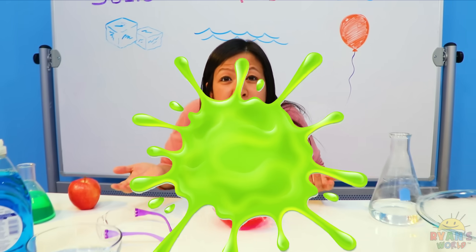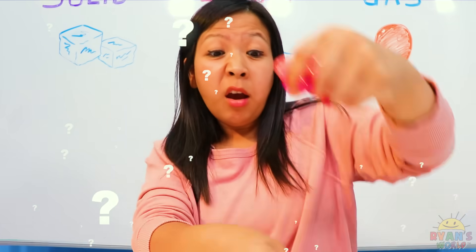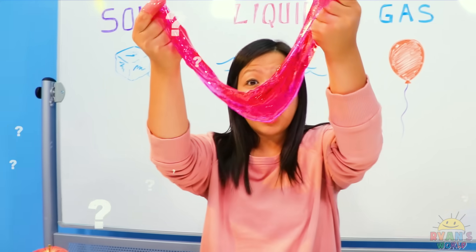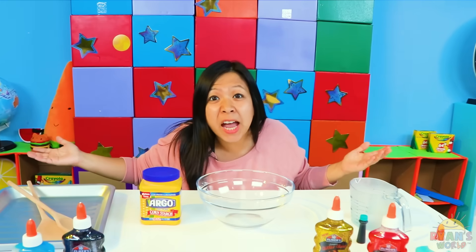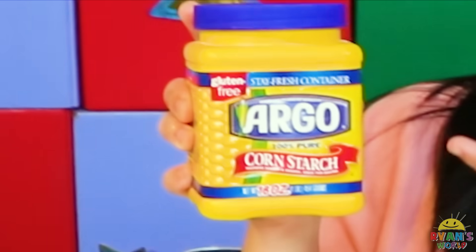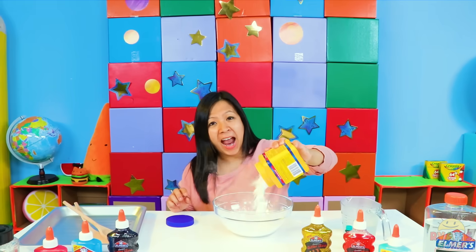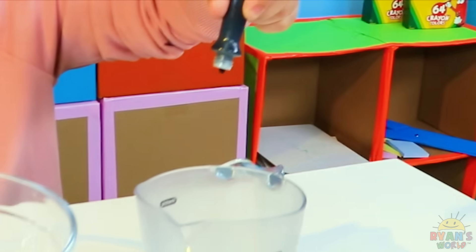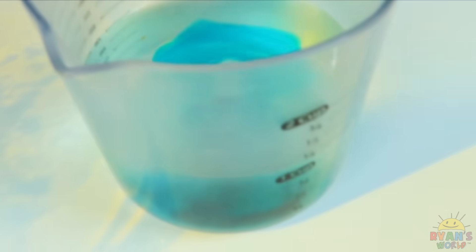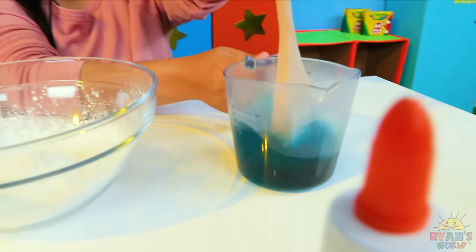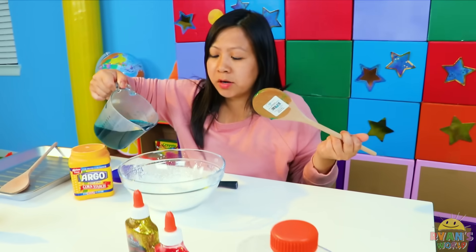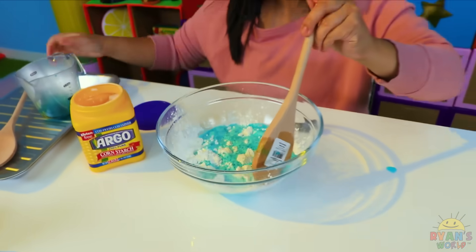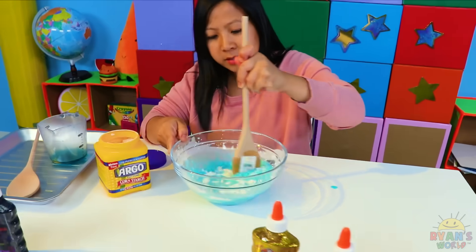But what happens with things like slime? Is this a solid or is it a liquid? Before we explain what slime is, let's make our own special kind called Oobleck. All you need is cornstarch, food coloring, and water. Pour it inside a bowl. Let's make our water color green. Mix it up.